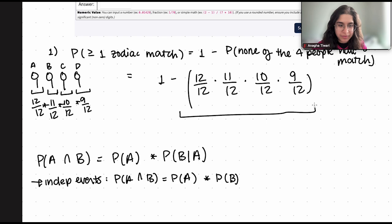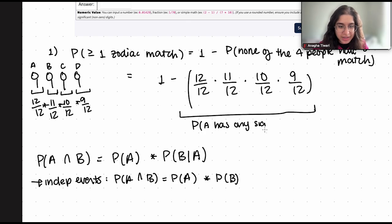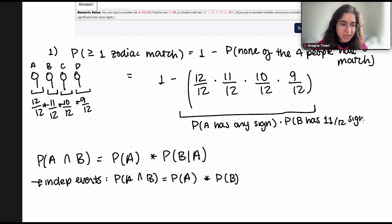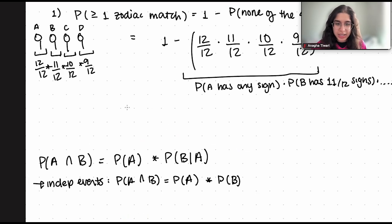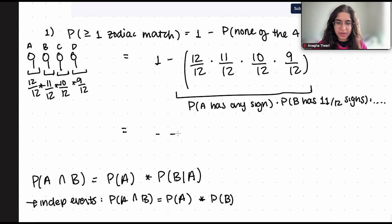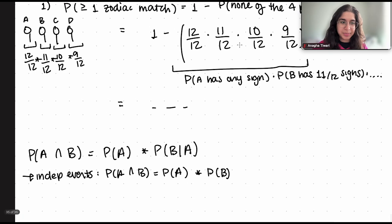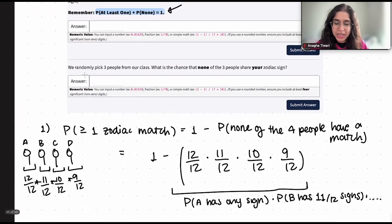This can be rewritten as: person A has any sign — 12/12 — times person B has 11/12 signs, and so on. When you calculate this, you can either enter it as written or compute the final numeric answer. It's a straightforward math problem at that point.